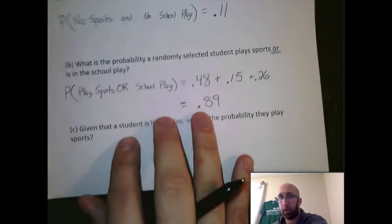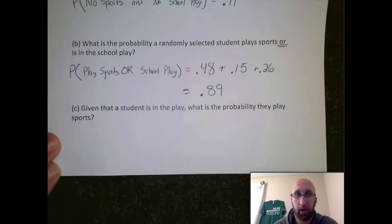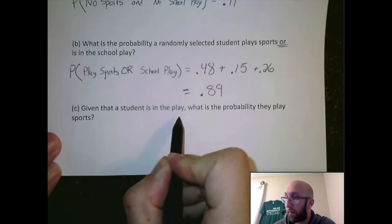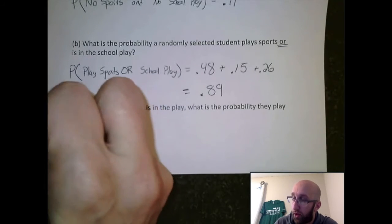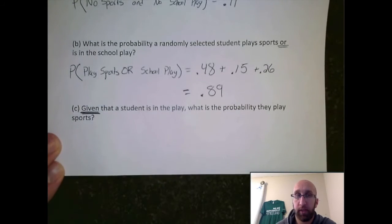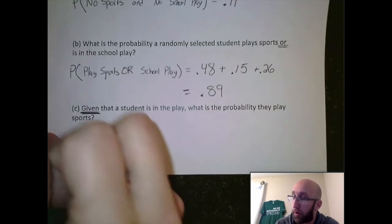Our final question here with Venn diagram probabilities is given that a student is in the play, what is the probability they play sports? So the word that jumps out to me is given. We're given the knowledge that it is already someone who is in the school play. We want to know the probability that they also play sports.